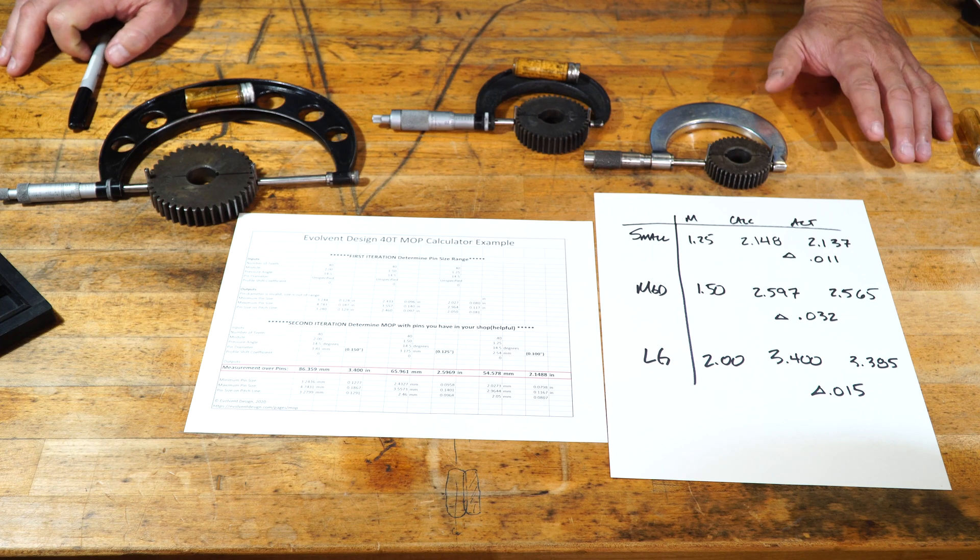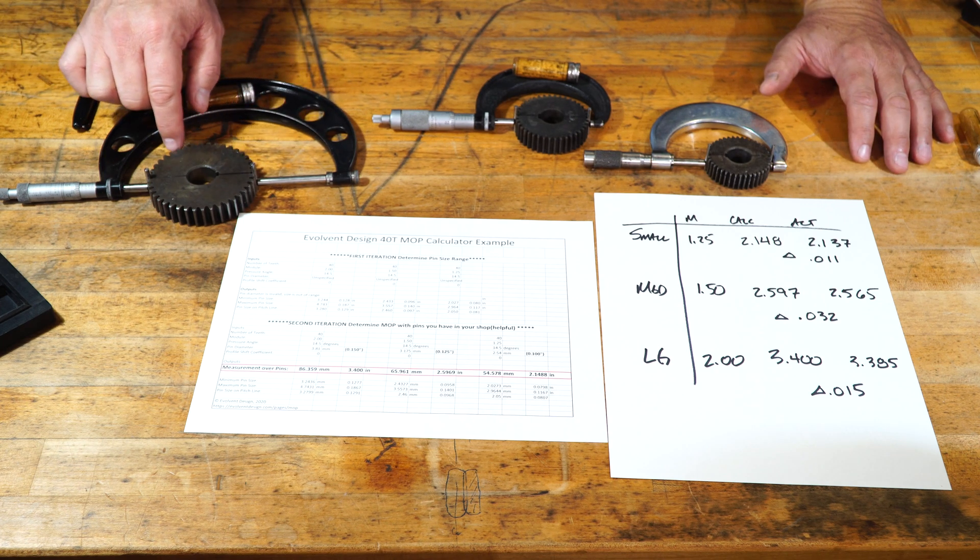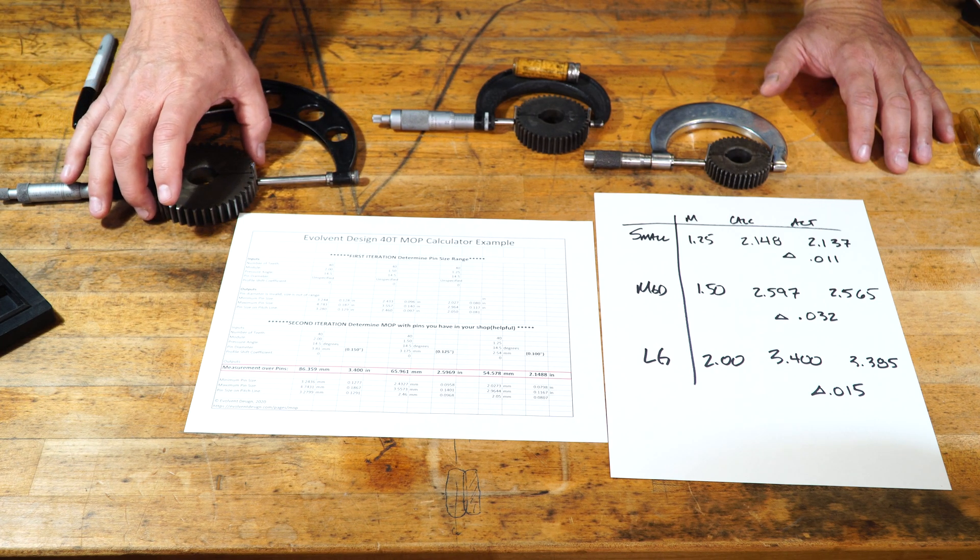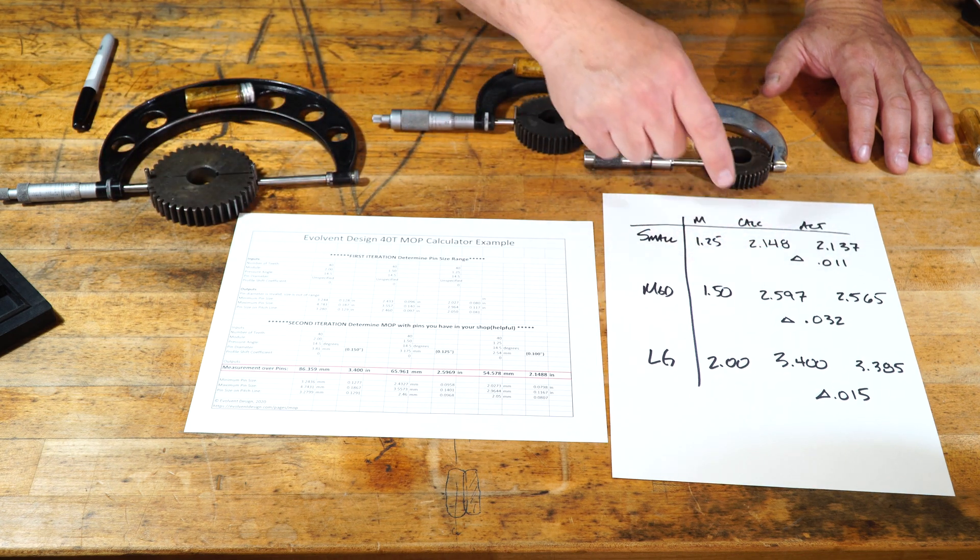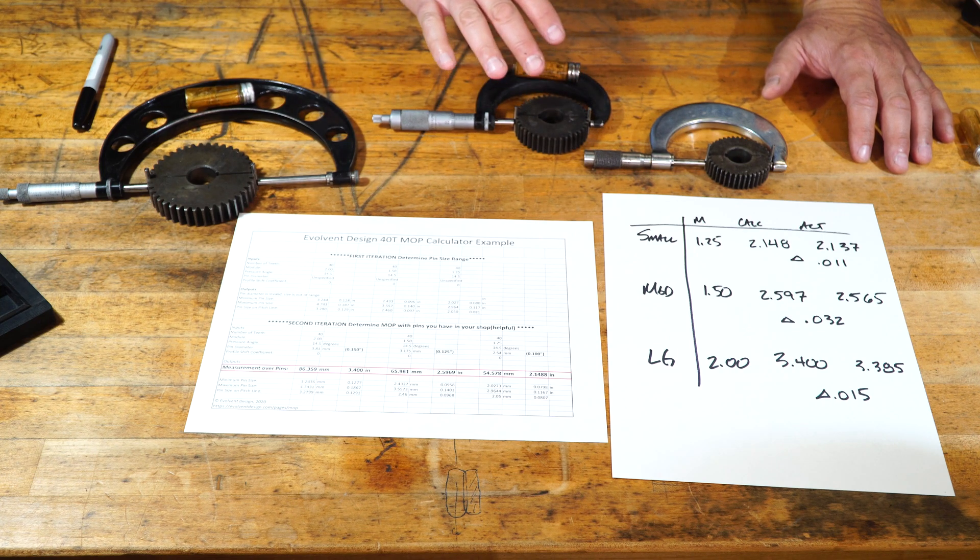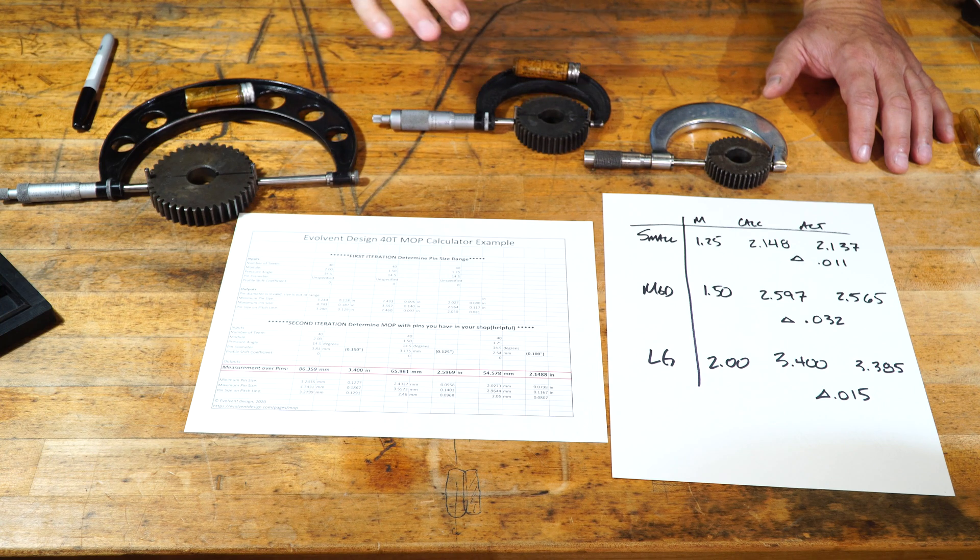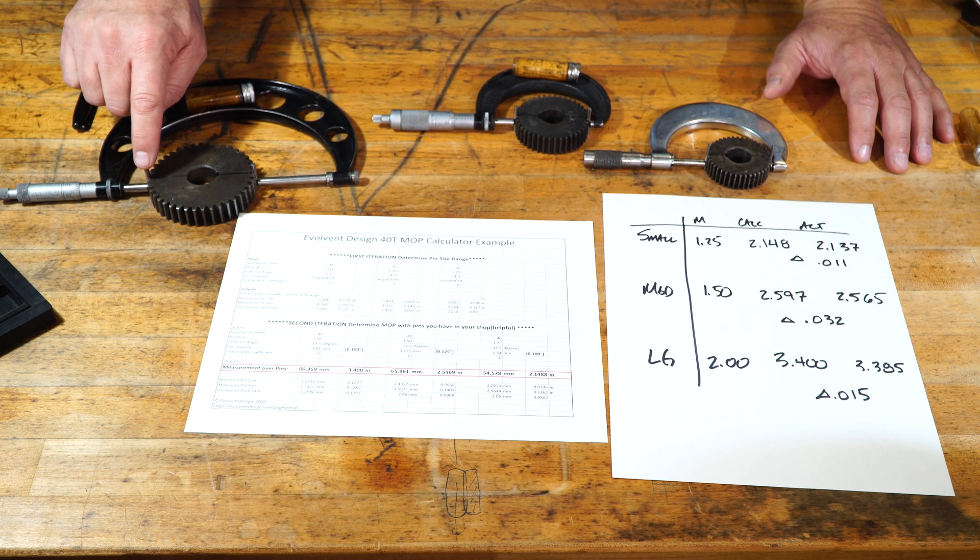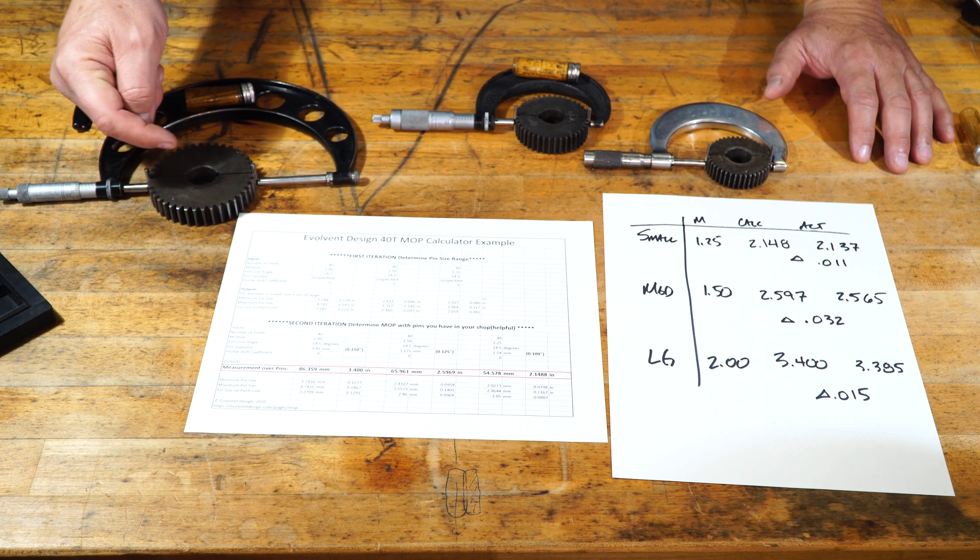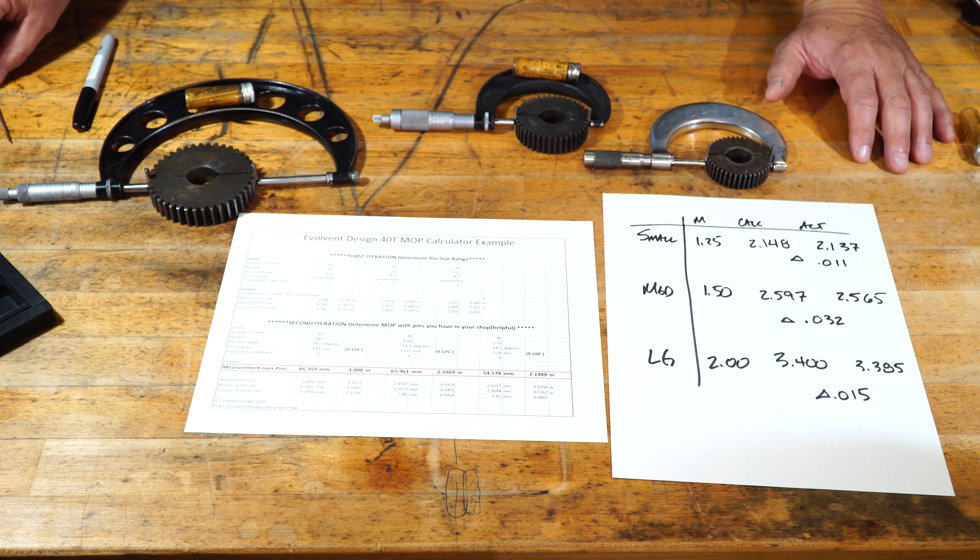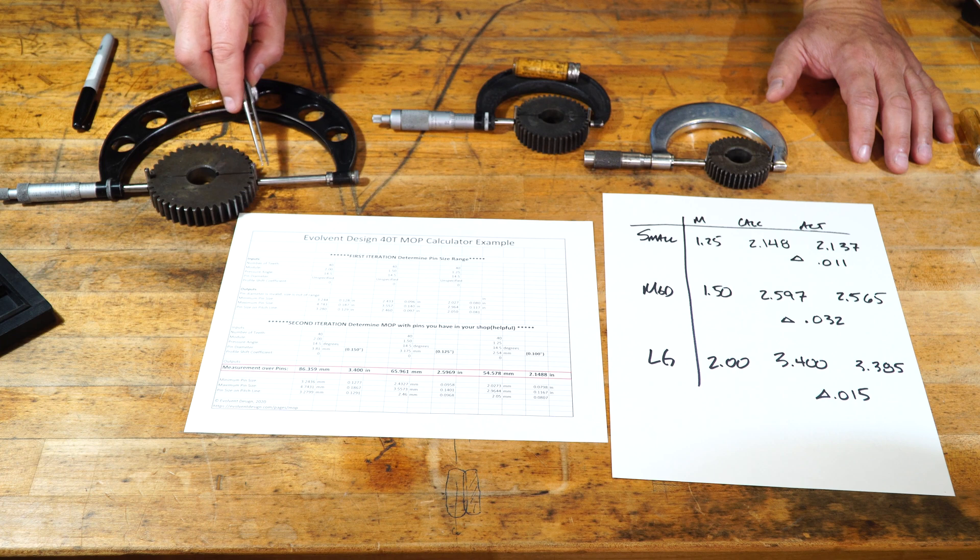So, if you get a gear and you want to reverse engineer it and then make a new one, you'll probably get the tooth count correct. You might even get the OD or ID correct. But you can't really get in there and examine the pitch line unless you have pins and a calculator to calculate all these things. As one may expect, you could use another size pin. The pin range is a little bit narrow here but a smaller pin would go further down in the root, down here, and a larger pin is going to be used to measure on the involute further out here.